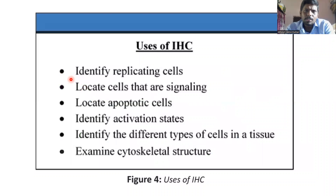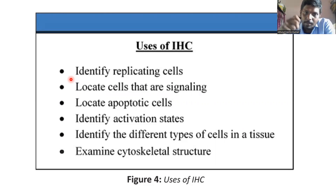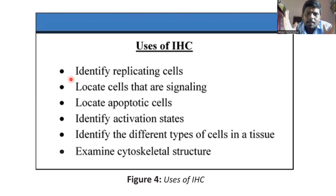A few uses of immunohistochemistry: we can identify replicating cells within the body, locate cells that are giving certain signals, locate apoptotic cells — cells that have programmed death periodically — identify activation states, identify different types of cells in tissue, and even examine the cytoskeletal structure of cells. These are just a few of the almost 200 applications of immunohistochemistry.